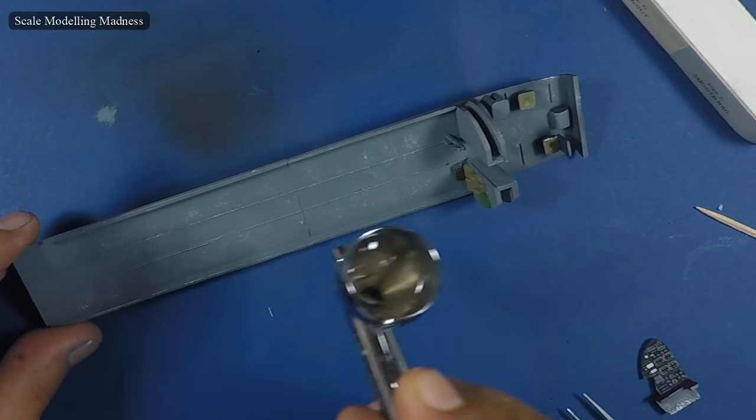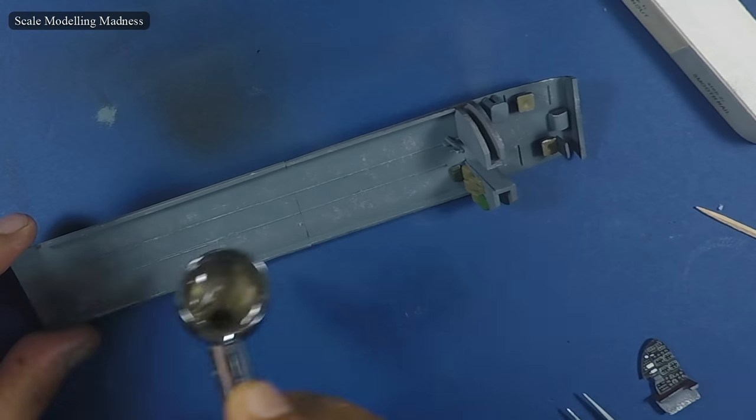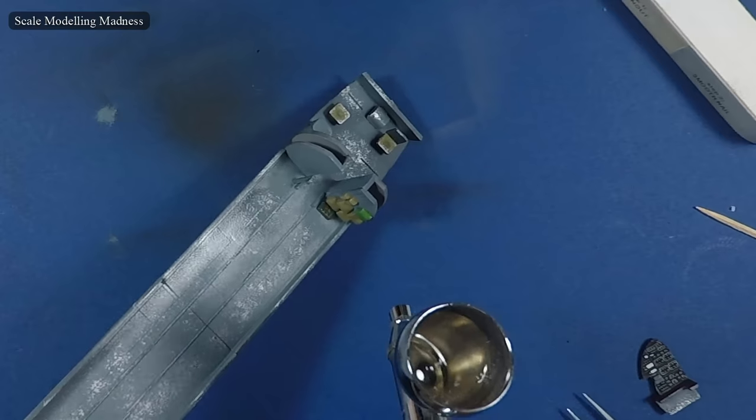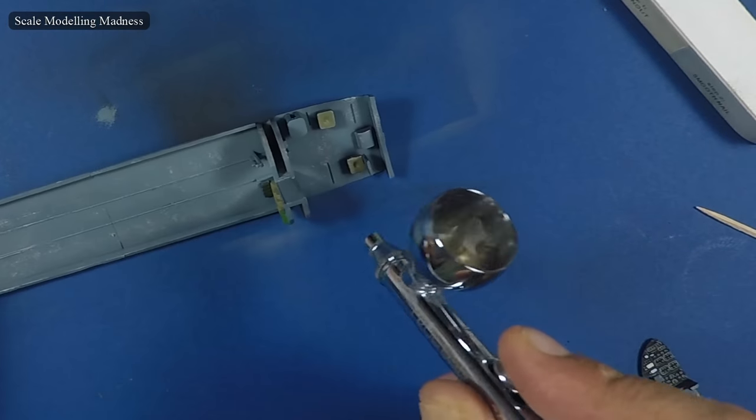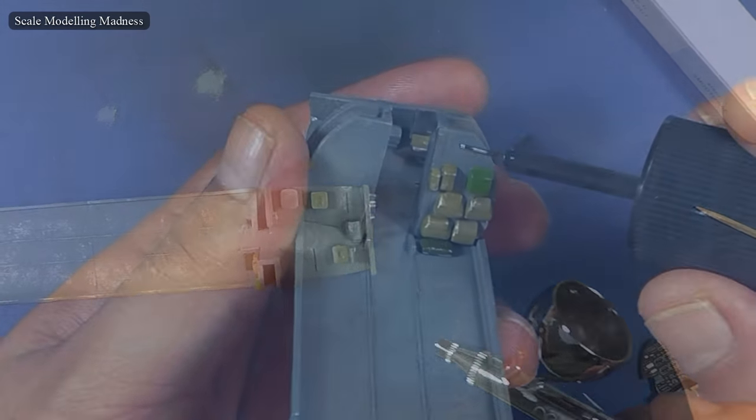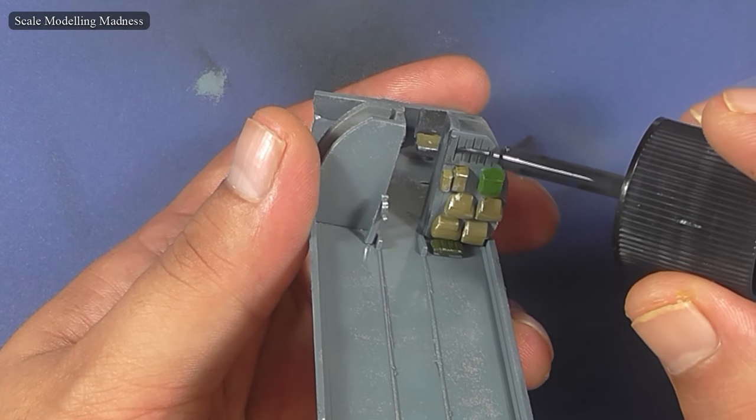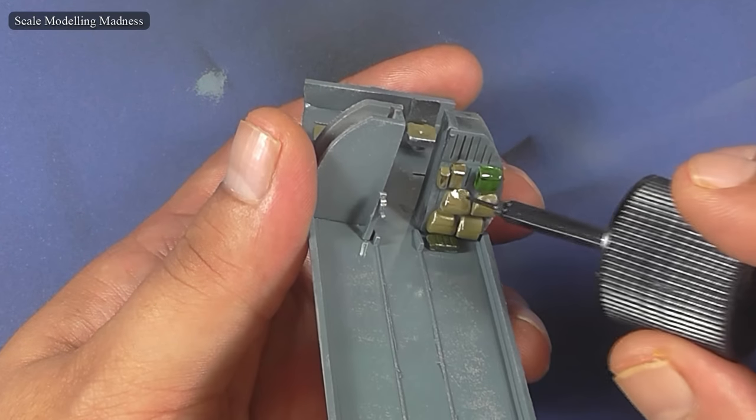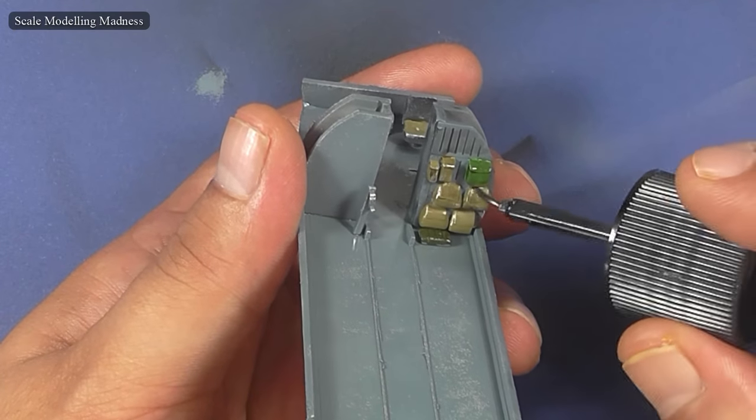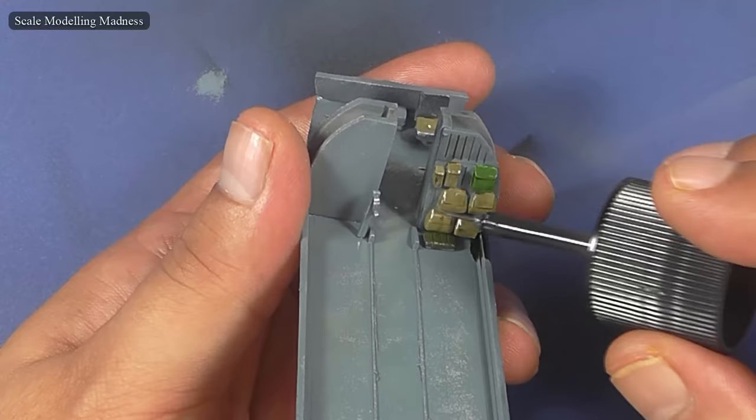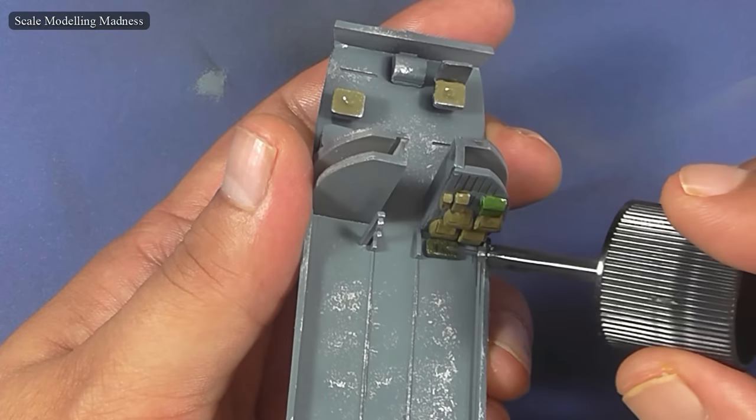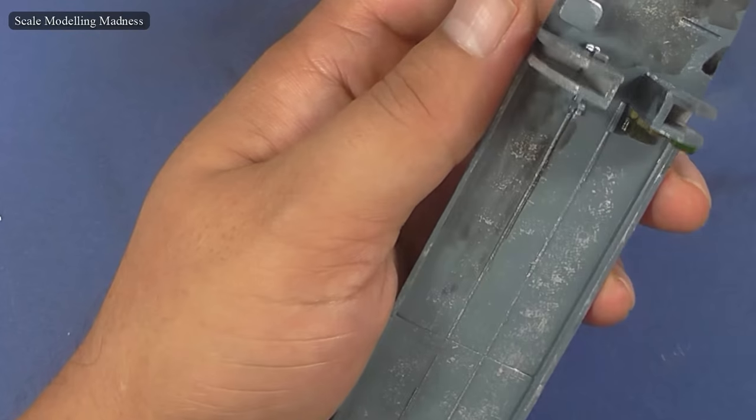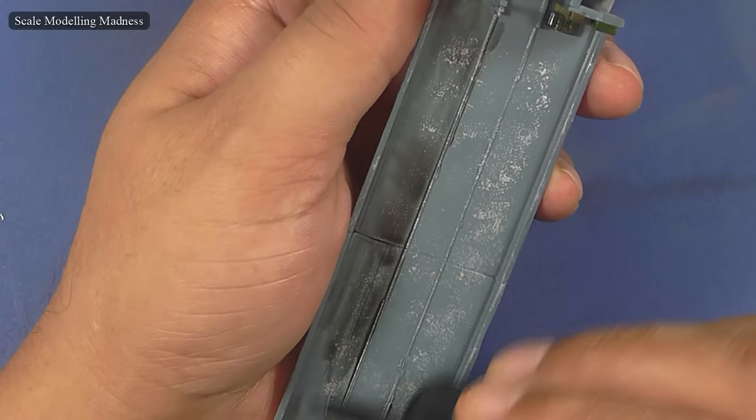The work so far is sealed in with a couple of layers of gloss varnish. Now I apply some Tamiya Panel Line Accent Wash.